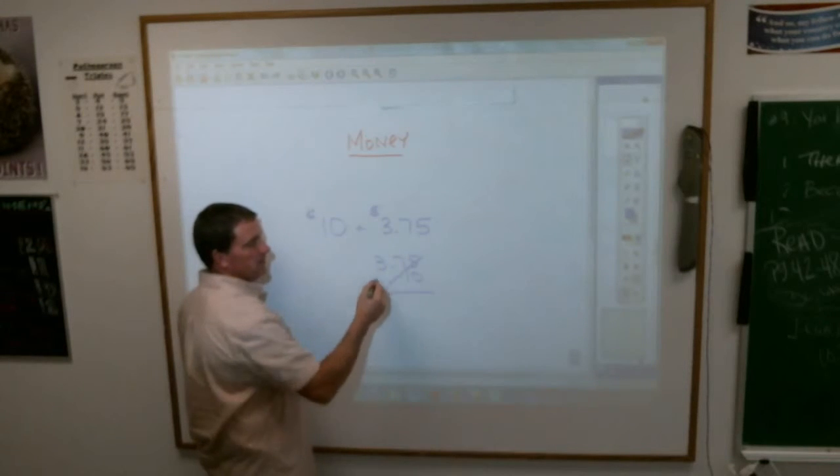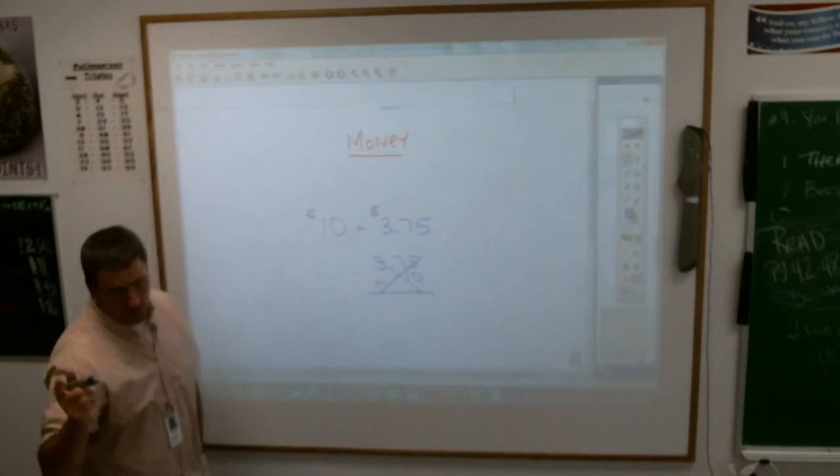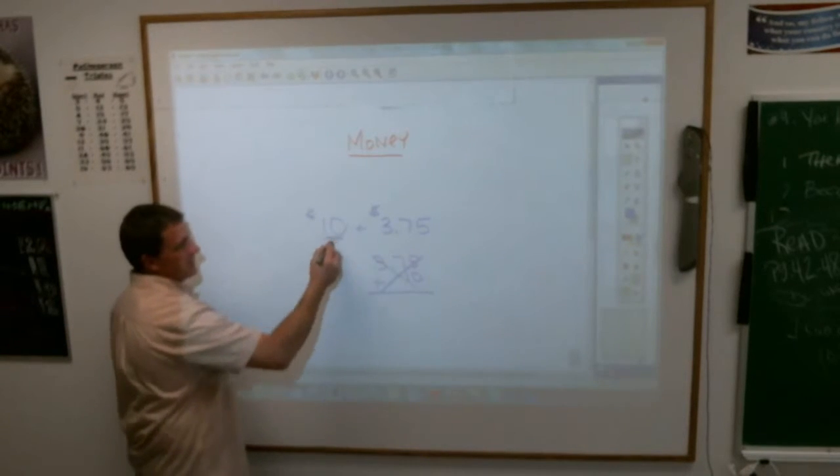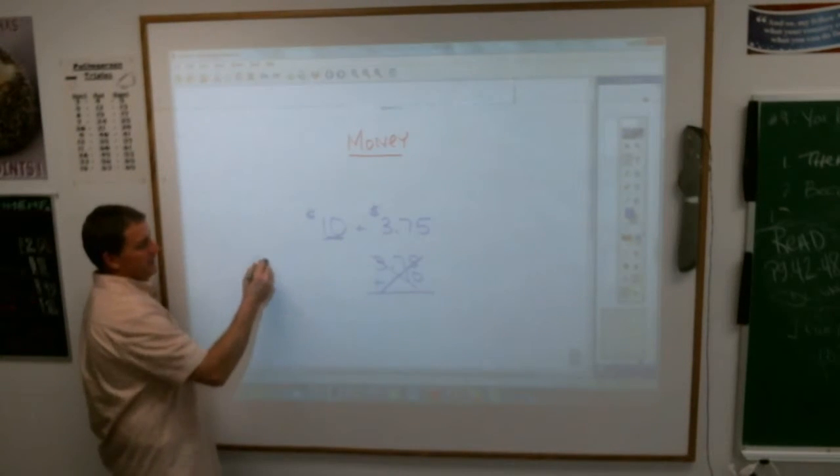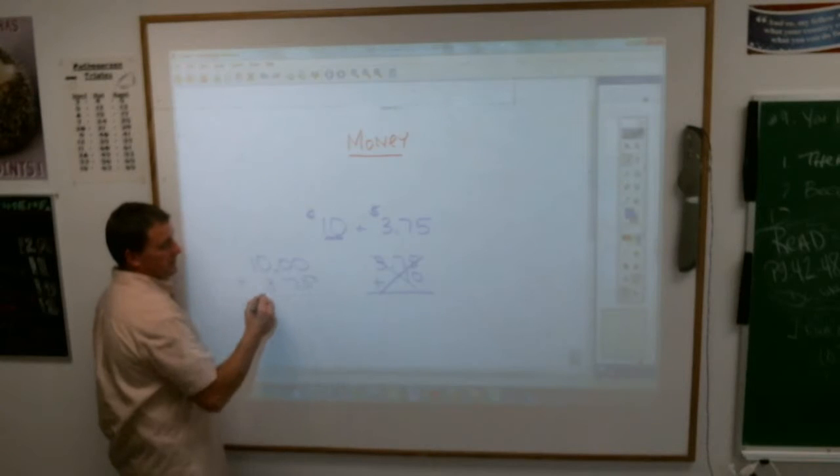What should you do if you see $10 plus $3.75? Make this as dollars and cents. So it would be $10 with a decimal point and zeros after it, plus $3.75 like that. So your cents goes down here, and it's $13.75.